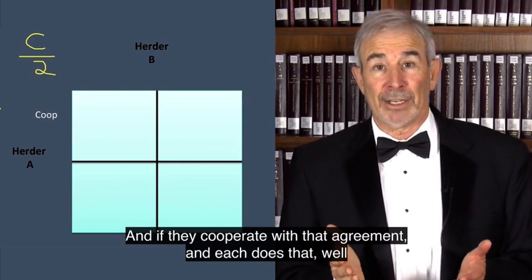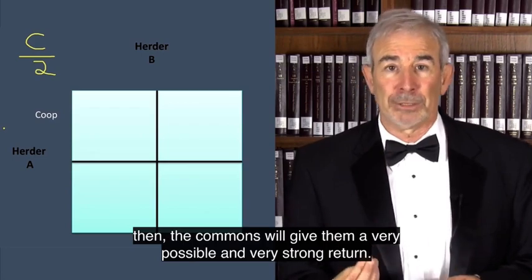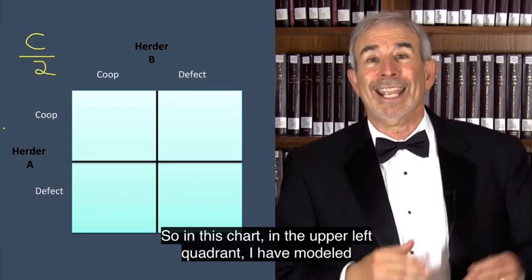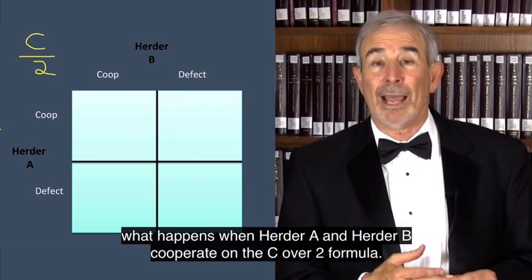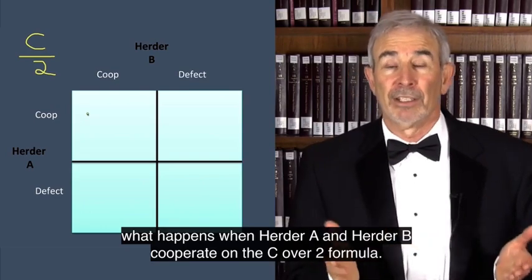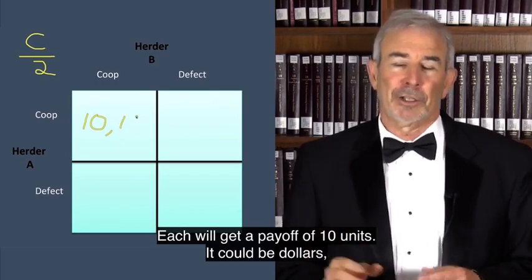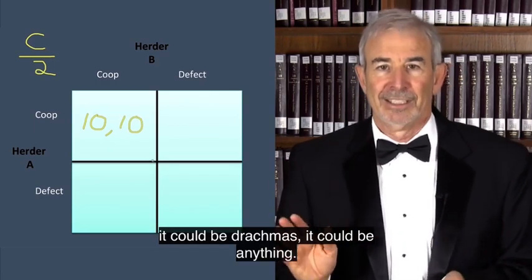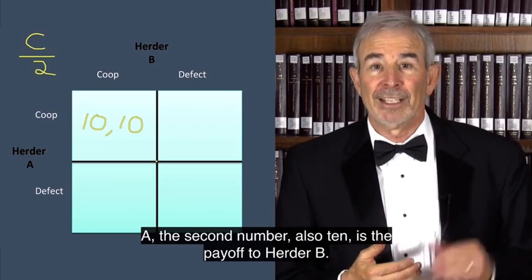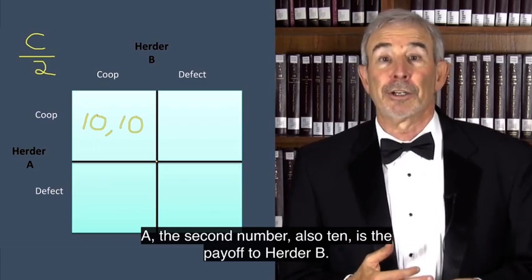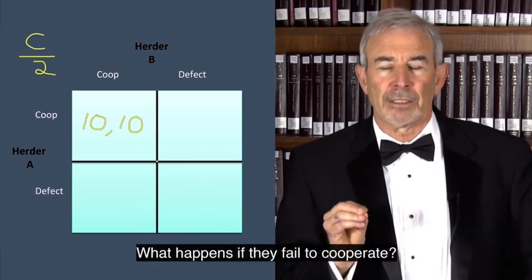And if they cooperate with that agreement and each does that, well then, the commons will give them a very possible and very strong return. So in this chart, in the upper left quadrant, I have modeled what happens when herder A and herder B cooperate on the C over two formula. Each will get a payoff of 10 units. It could be dollars, it could be drachmas, it could be anything. 10 units. And assume that's a good number. The first number, by the way, is the payoff to herder A. The second number, also 10, is the payoff to herder B. And that's what happens when they cooperate.